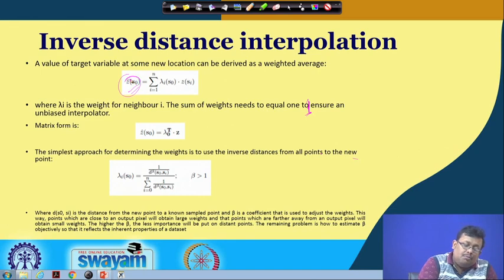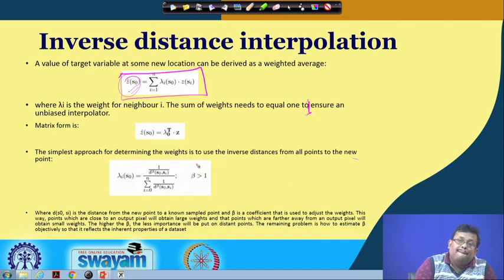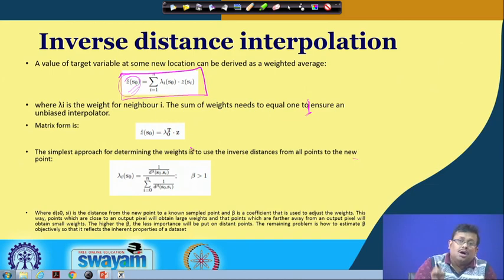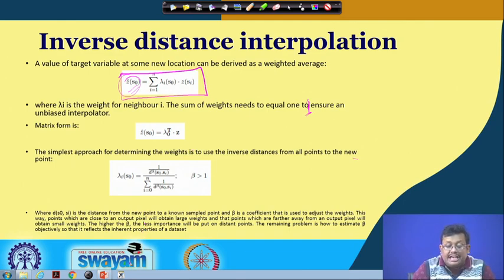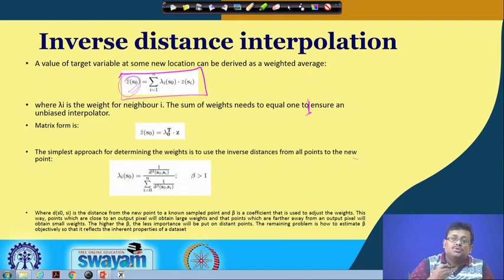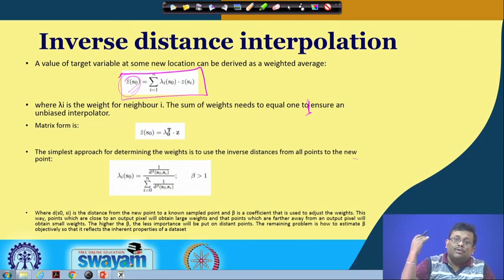We can assign a value at a particular point based on nearby neighboring points, but we must assign specific weight values to individual neighboring points. Points close to the unobserved point of interest will have higher weights than points further away from the point of interest.